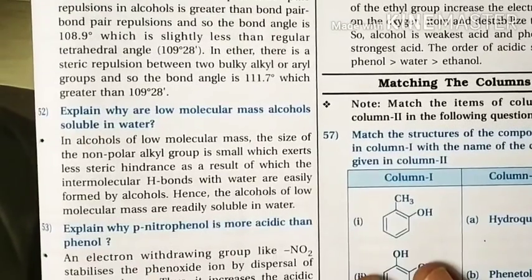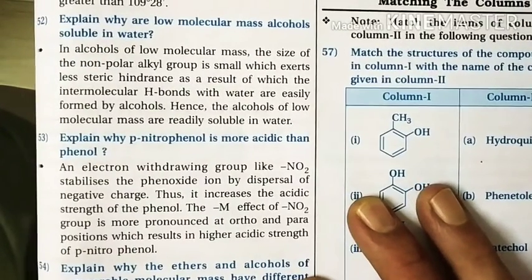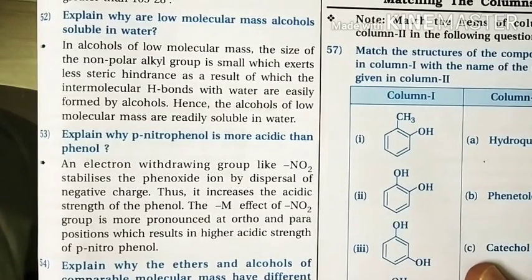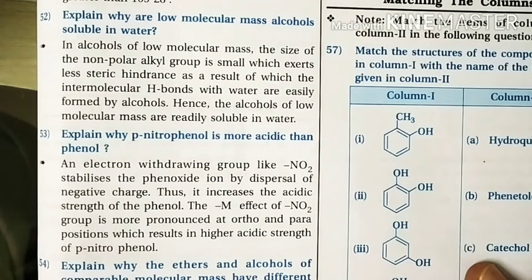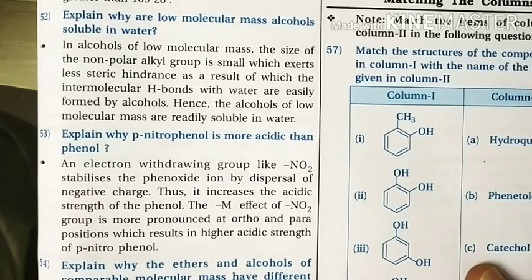Question 52: Why are lower molecular mass alcohols soluble in water? Solubility of alcohols in water is due to hydrogen bonding between the hydroxyl group of alcohol and water molecules. However, the hydrocarbon part (R group) tends to prevent hydrogen bond formation and decreases solubility. In lower molecular mass alcohols, the hydrocarbon part is small, so hydrogen bonding dominates and lower molecular mass alcohols are soluble in water.